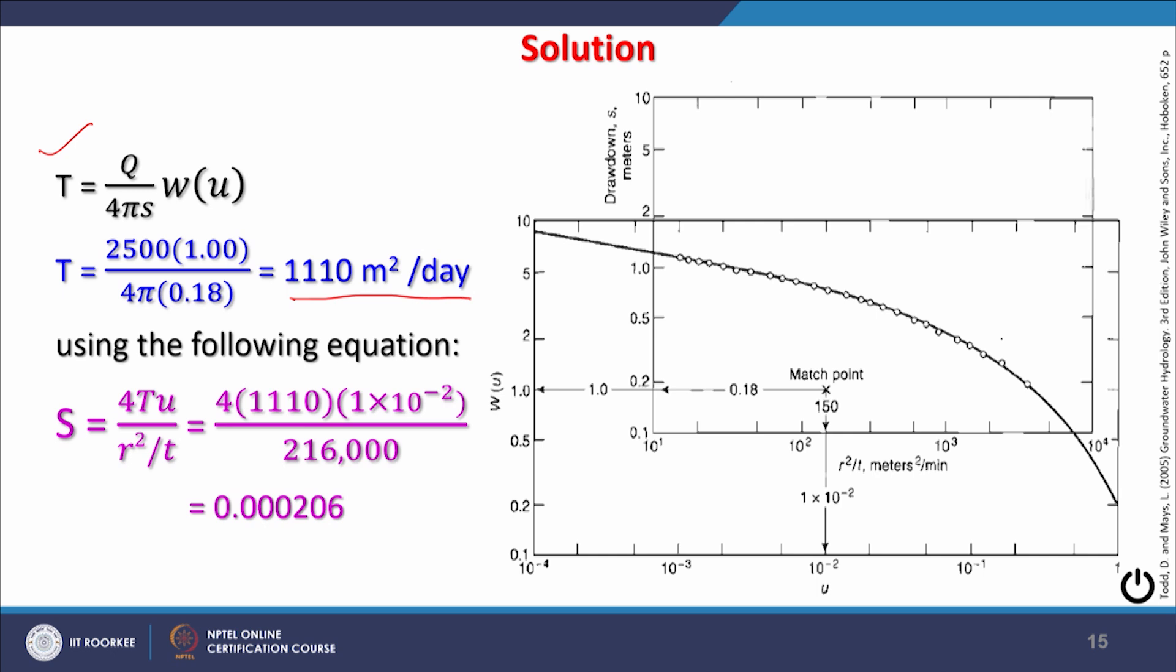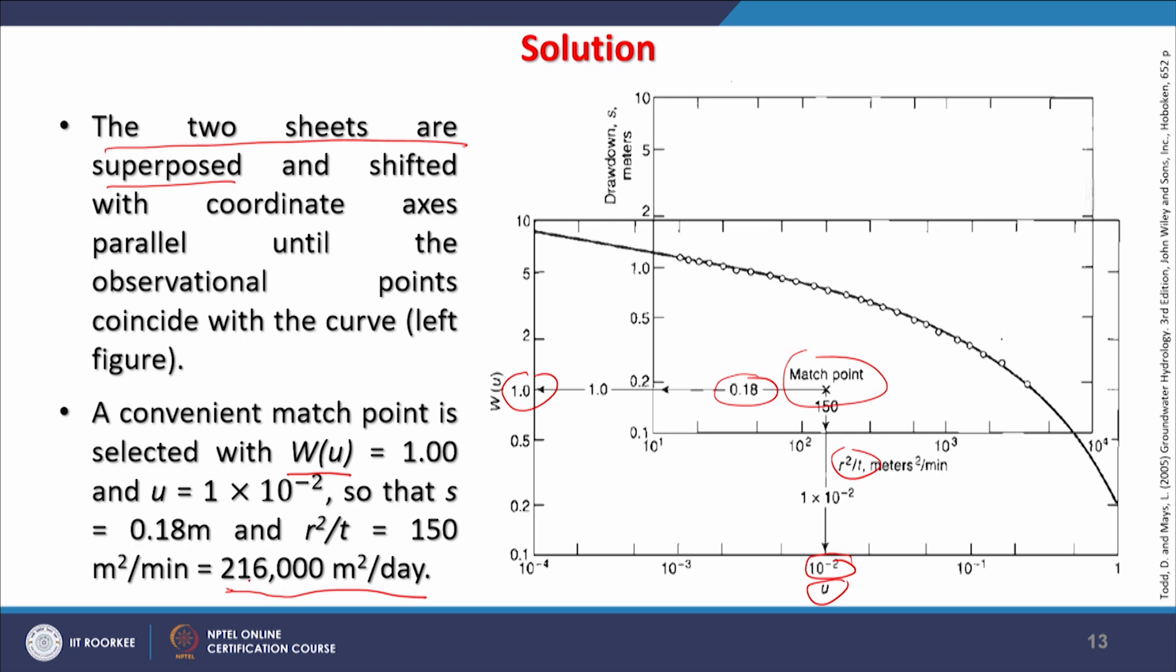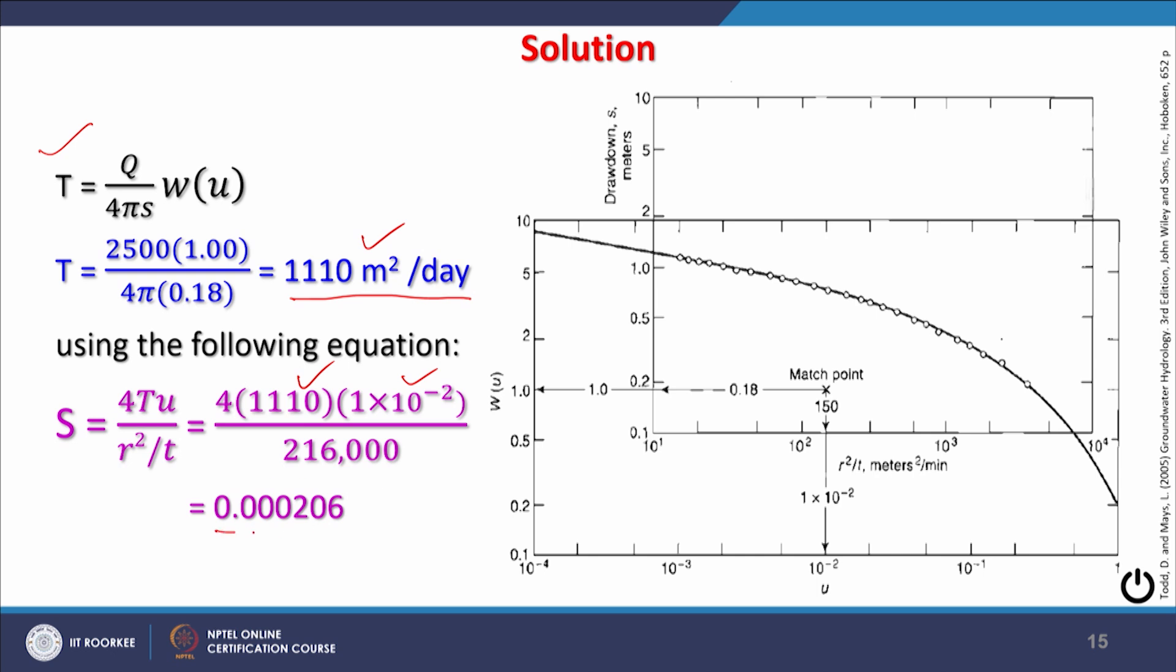Using the equation storability S = 4Tu/(r²t) and substituting the values we are getting—1×10⁻² and also 216,000 square meters per day—we get the storability value. Storability, as you know, is a ratio quantity and will not have any units.